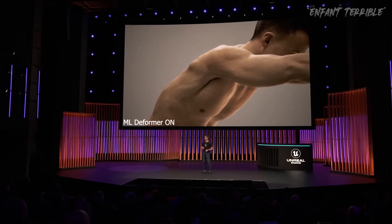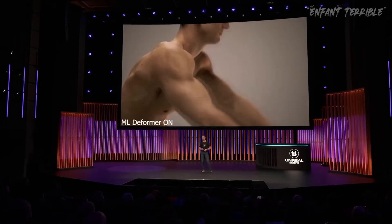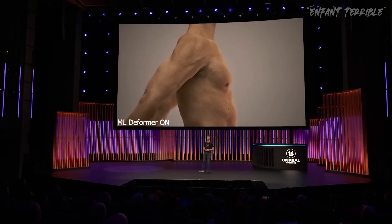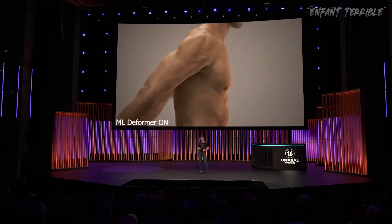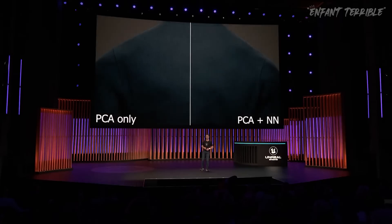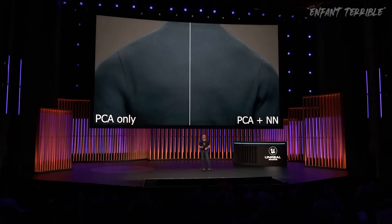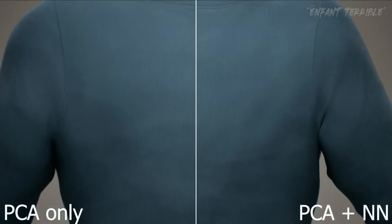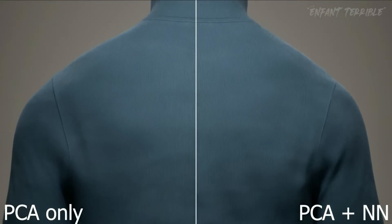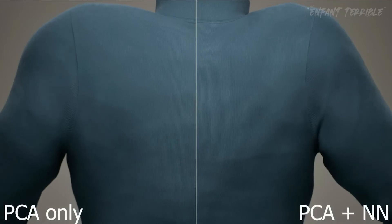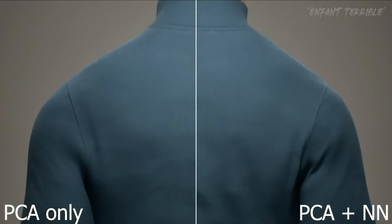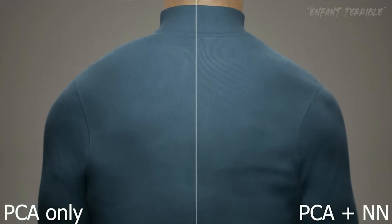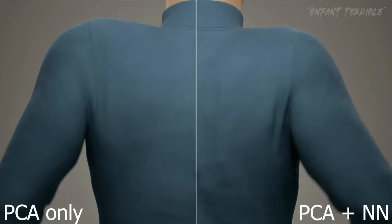This is a fully generalized model. We have not just trained it on the cinematic animation that we can see here. On the left is the nearest neighbor model with just the PCA layer active, and on the right you can see how the additional nearest neighbor set improves the fold reconstruction.